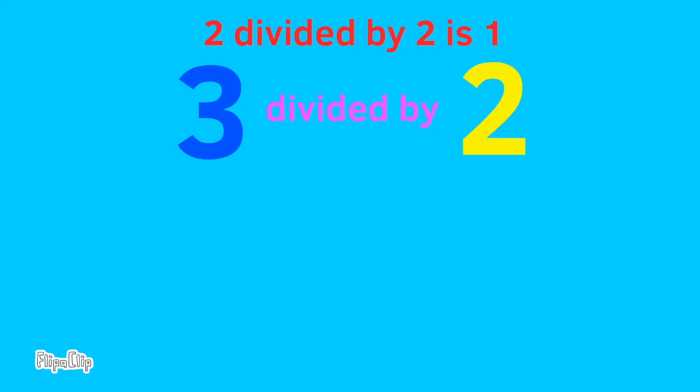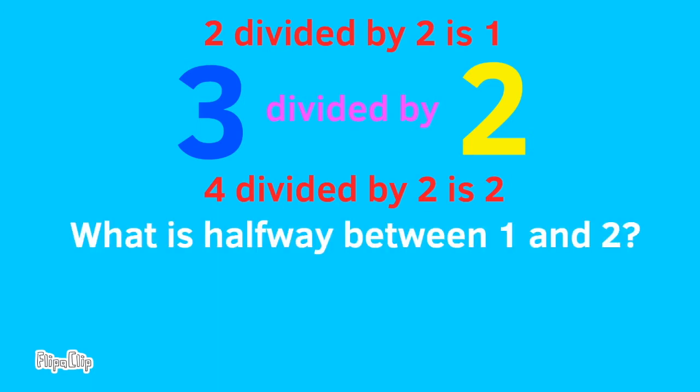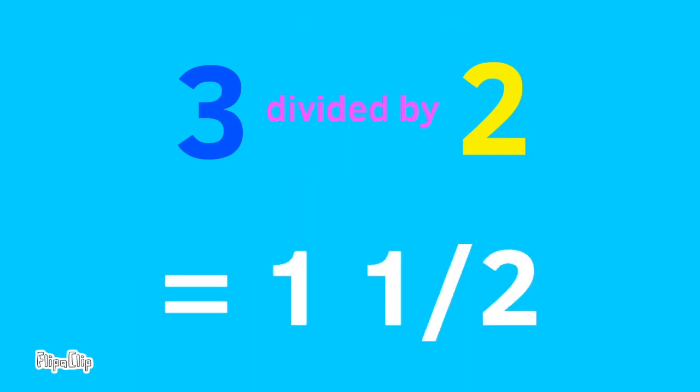3 divided by 2. 2 divided by 2 is 1, and 4 divided by 2 is 2. What is halfway between 1 and 2? 1 and a half.